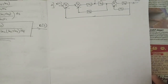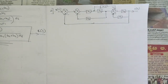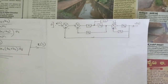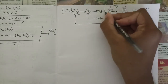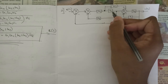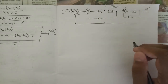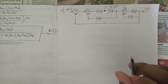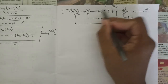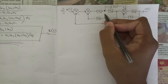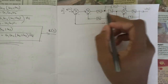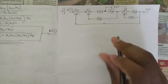First, before reducing the block, let's analyze it — what terms are given, how we can reduce it, how many summing points and takeoff points there are, and whether we can shift any of them. Here we can see that g1 and g2 appear to be in series and we could multiply them, but that's not the case in this problem. Between g1 and g2 there is a takeoff point, and when there is a takeoff point between two blocks we cannot say those two are in series — that you need to remember.